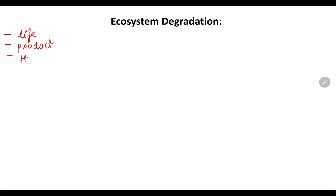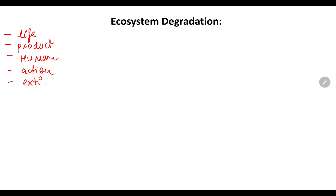Without ecosystems, human civilization would be impossible. Man is continuously disrupting the natural ecosystem by completely using resources beyond their limits. Because of the actions of humans, there is extinction of many species of plants as well as animals. So extinction is occurring because of unlimited resource utilization.